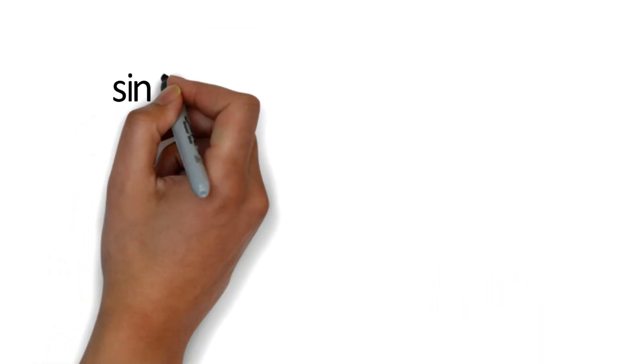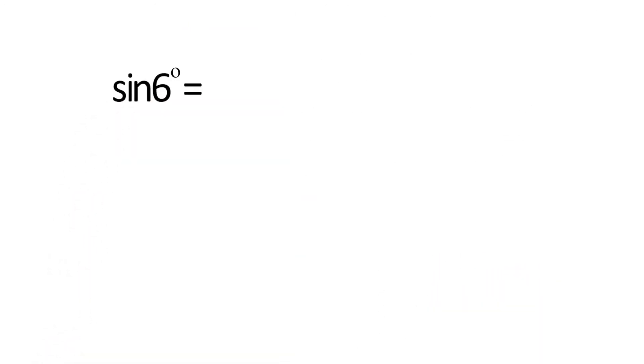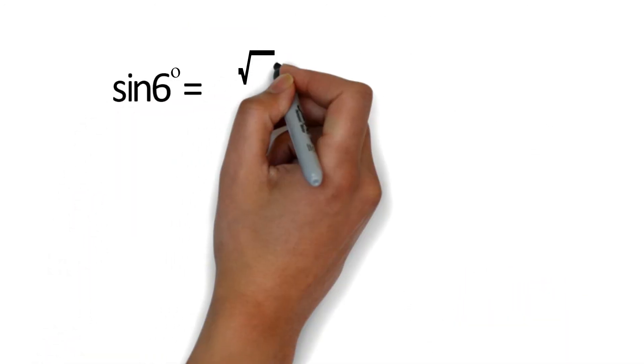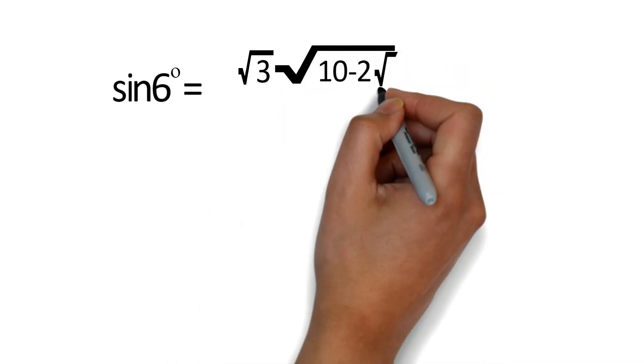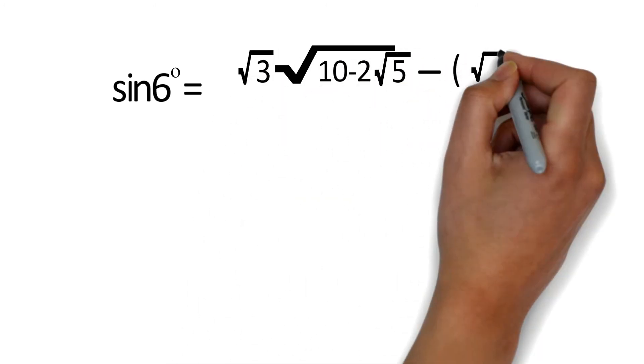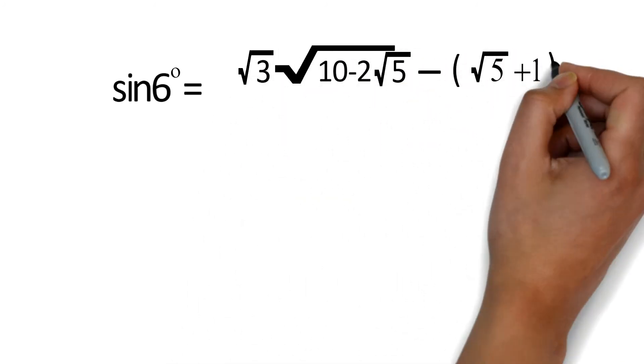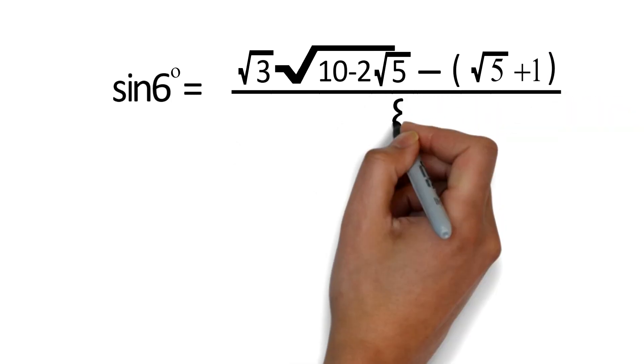After solving, we get sin 6° = (√3 · √(10 - 2√5) - √5 + 1) / 8.